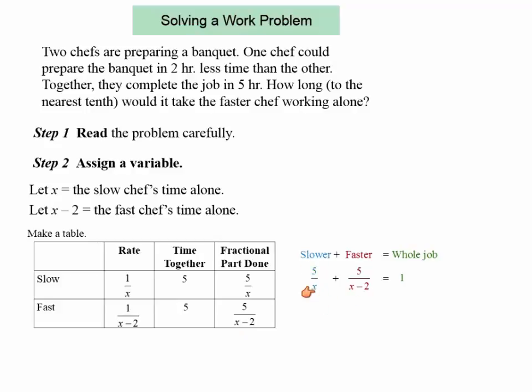If you put them together, five over x plus five over x minus two, that should add up to one, which is the whole job. So this is the equation that we need to solve for.